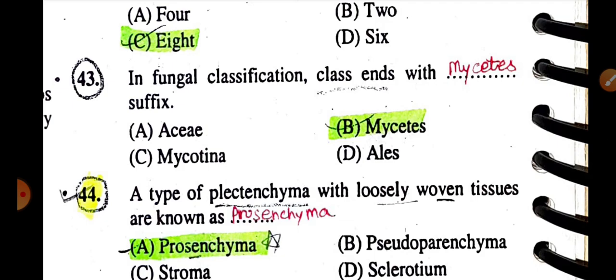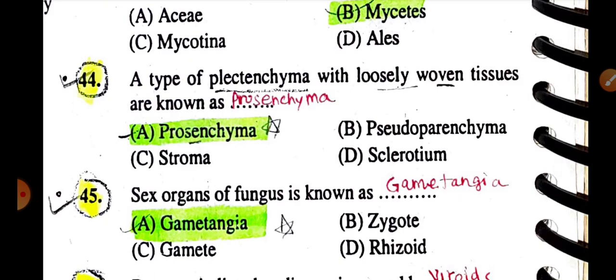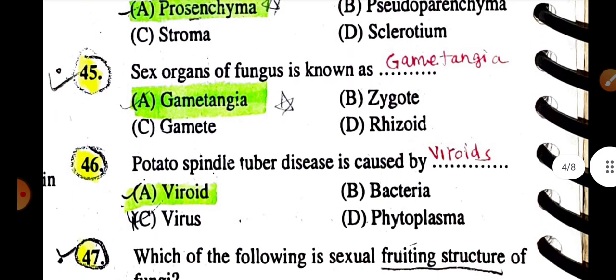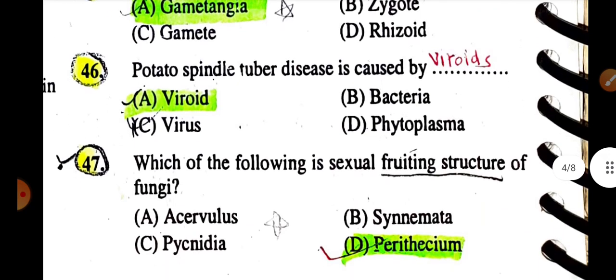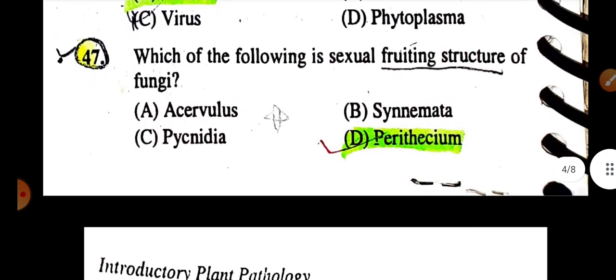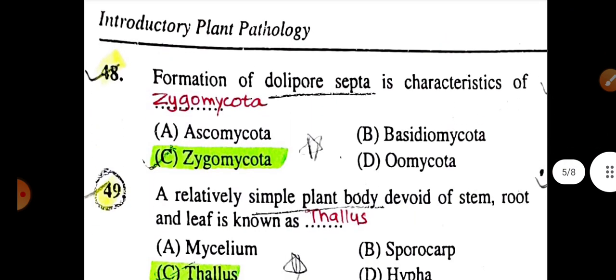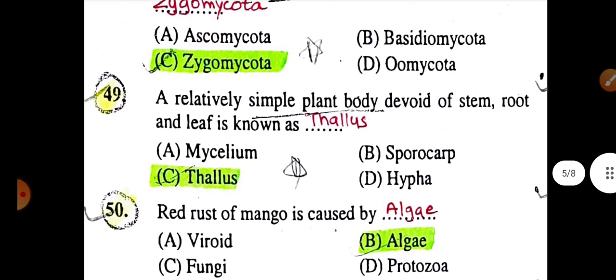A bacteriophage is a virus. Generally, how many ascospores are produced in a single ascus? Answer: Eight. In fungal classification, the class name ends with the suffix '-mycetes'. The type of plectenchyma with loosely woven tissue is known as prosenchyma. The sex organ of fungi is known as gametangia. Potato Spindle Tuber disease is caused by a viroid. Which of the following is a sexually fruiting structure of fungi? Answer: Perithecium. Formation of dolipore septa is characteristic of Chytridiomycota.